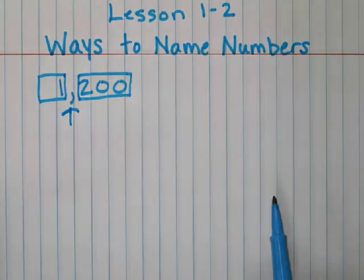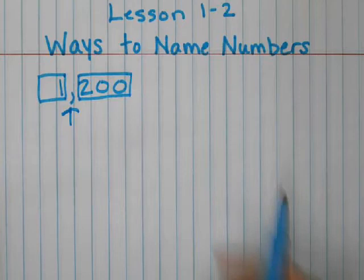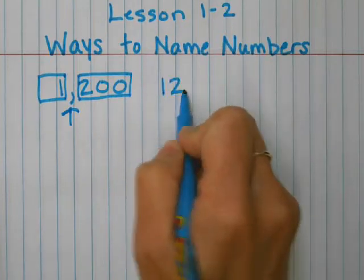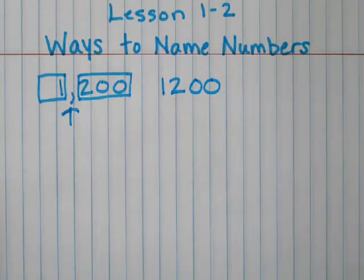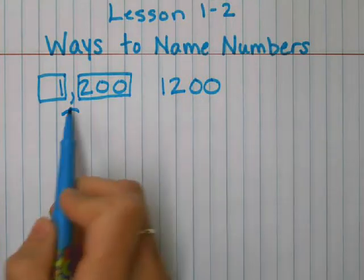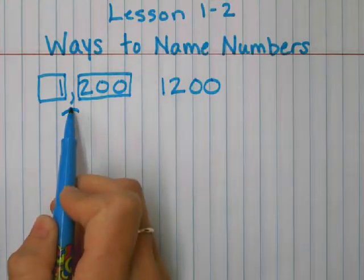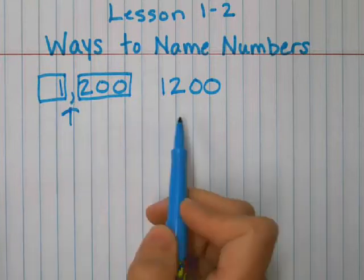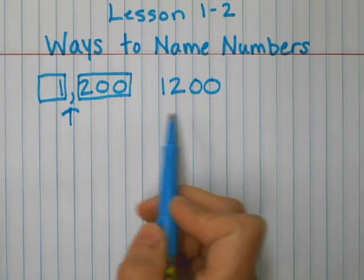There's another way to write and name this number. You can write it the same way, except you're not going to put the comma. And then you're going to read it as twelve hundred, because we only say thousands when the comma is there. So if the comma is not there, you read it as hundreds, twelve hundred.